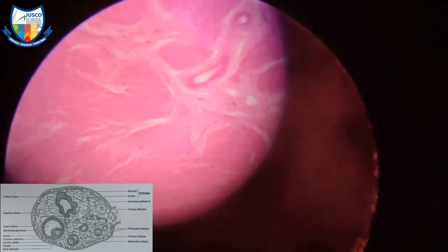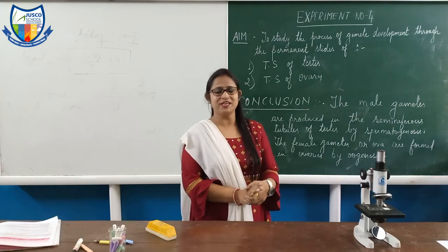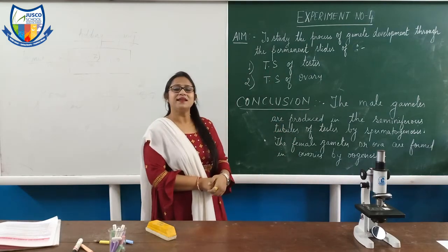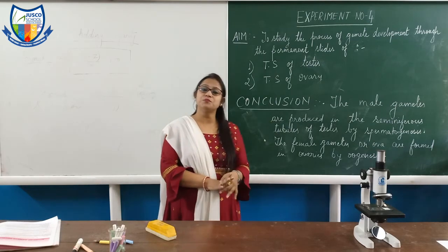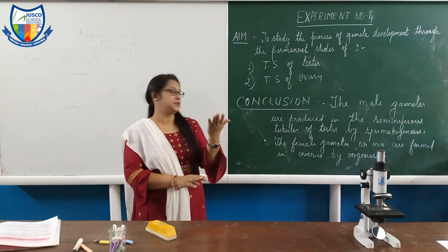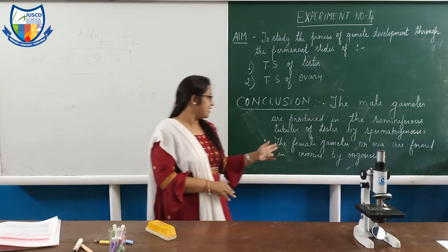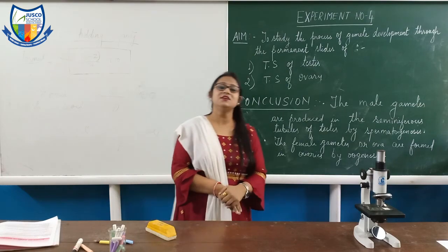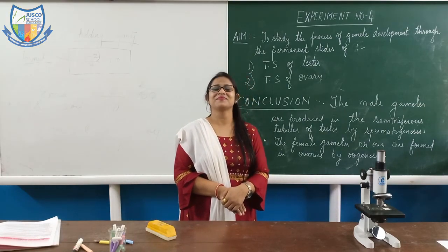So this together is the transverse section of ovary and testis. We conclude that the male gametes are produced in the seminiferous tubules of the testis by spermatogenesis, and the female gametes or ova are formed in the ovaries by oogenesis. Thank you.